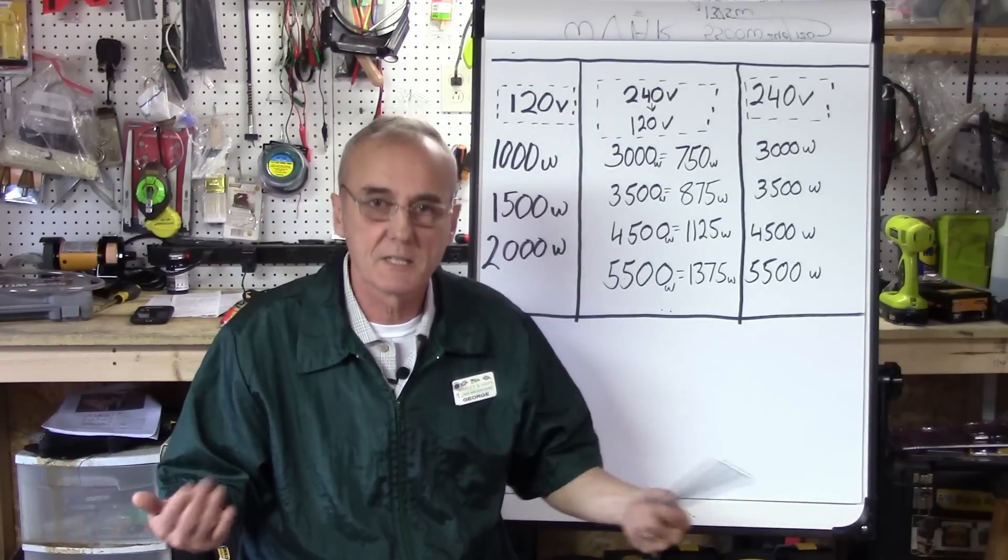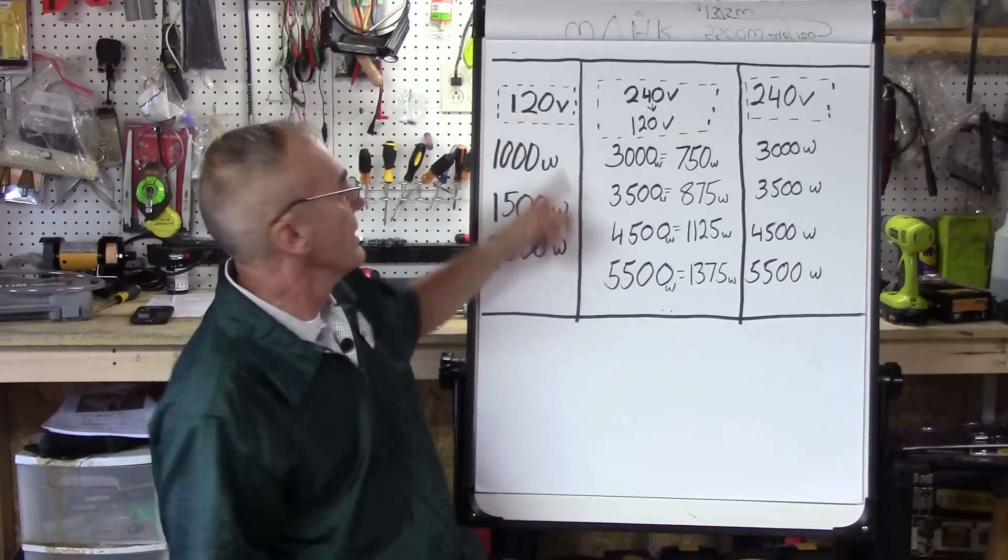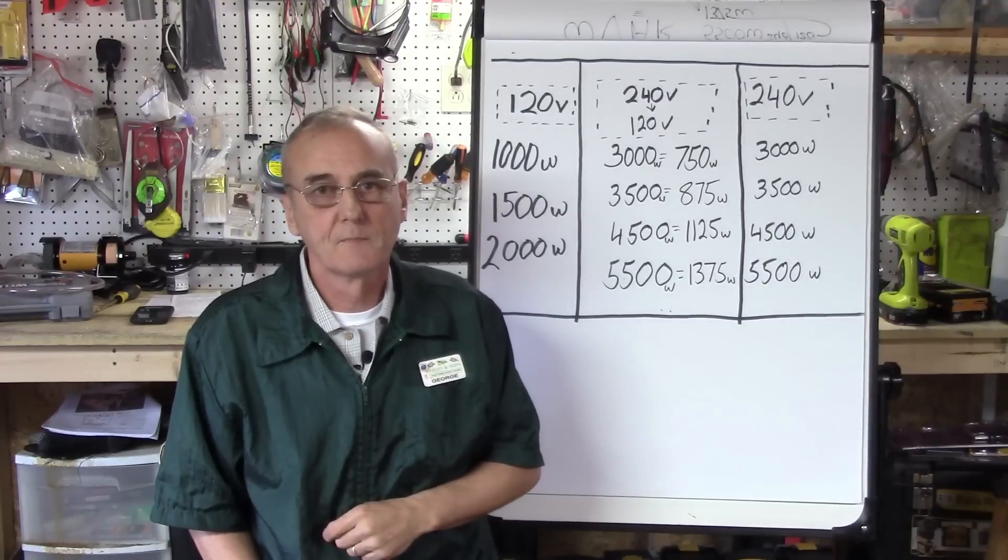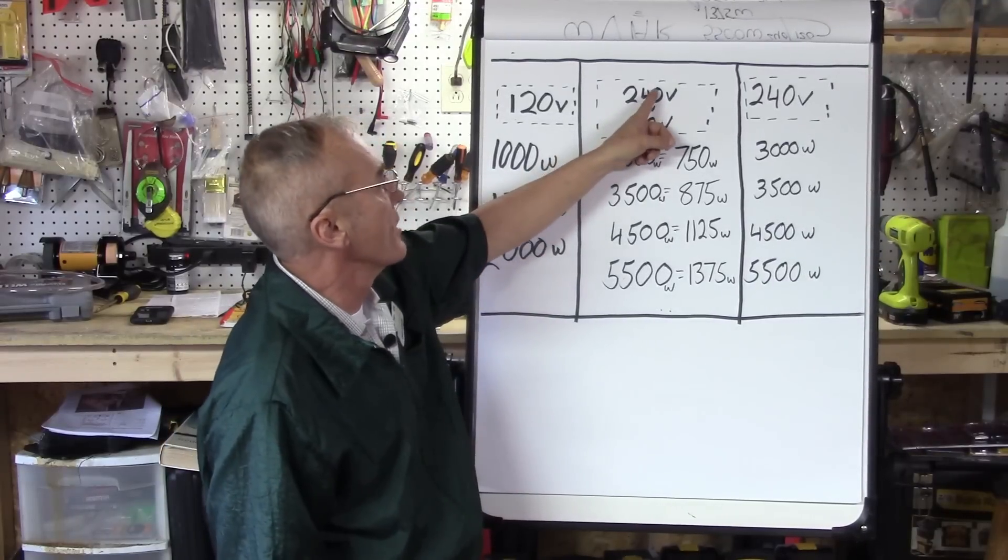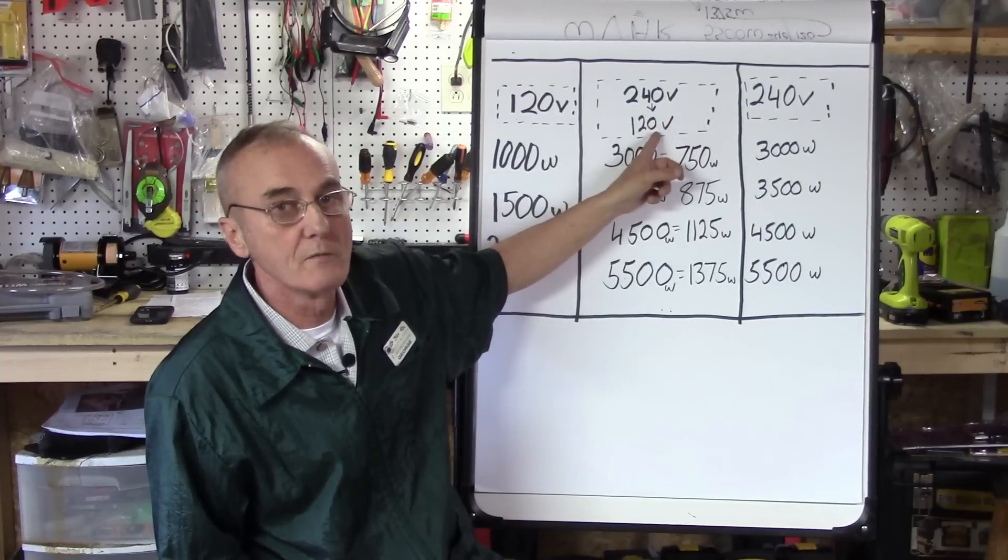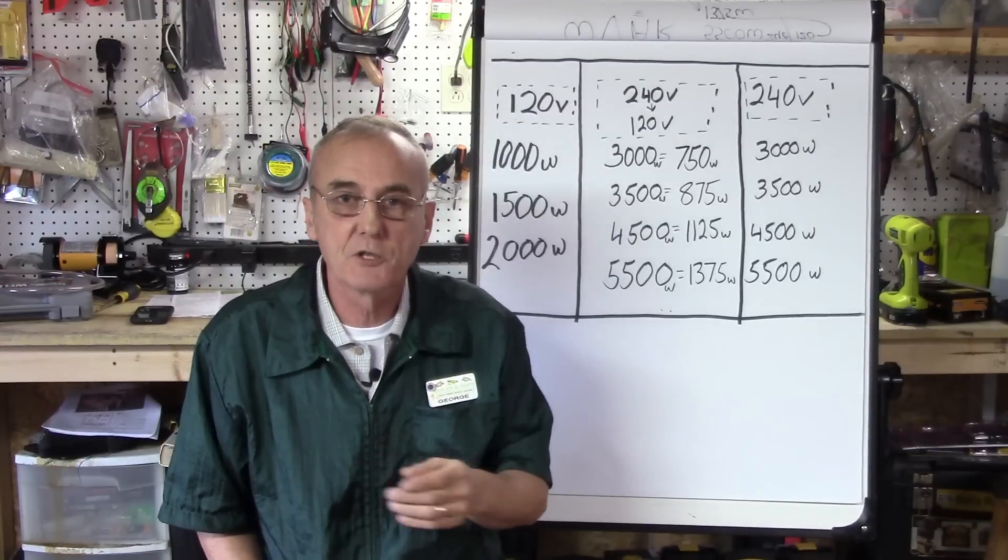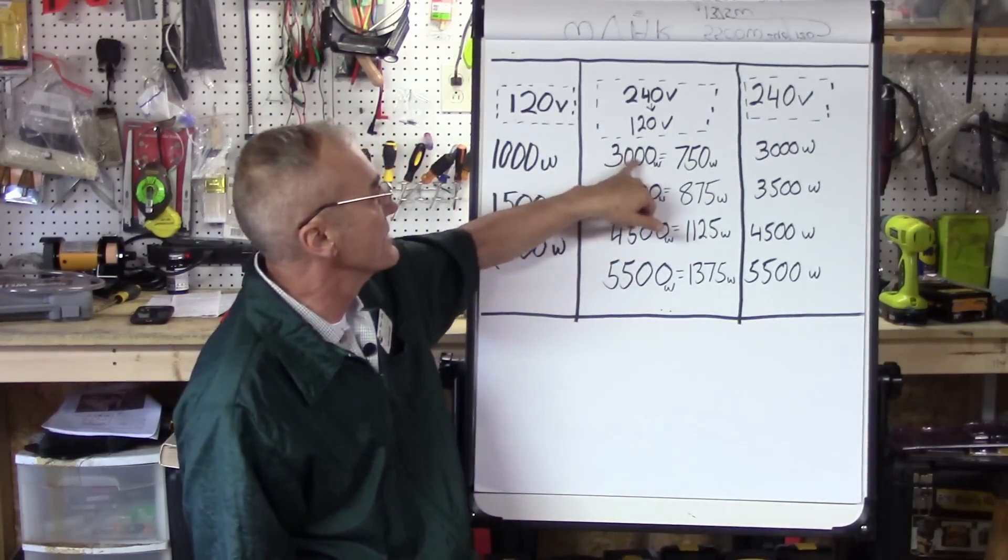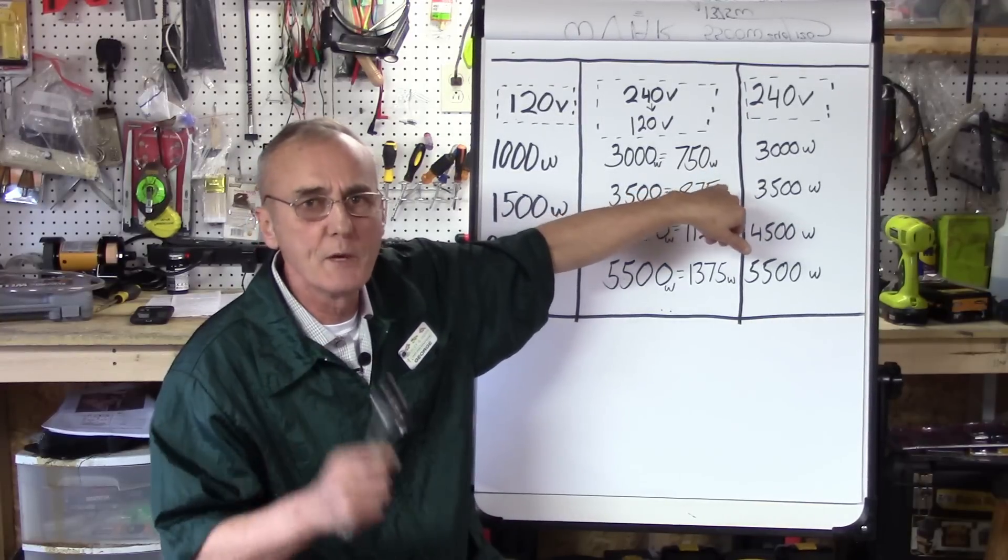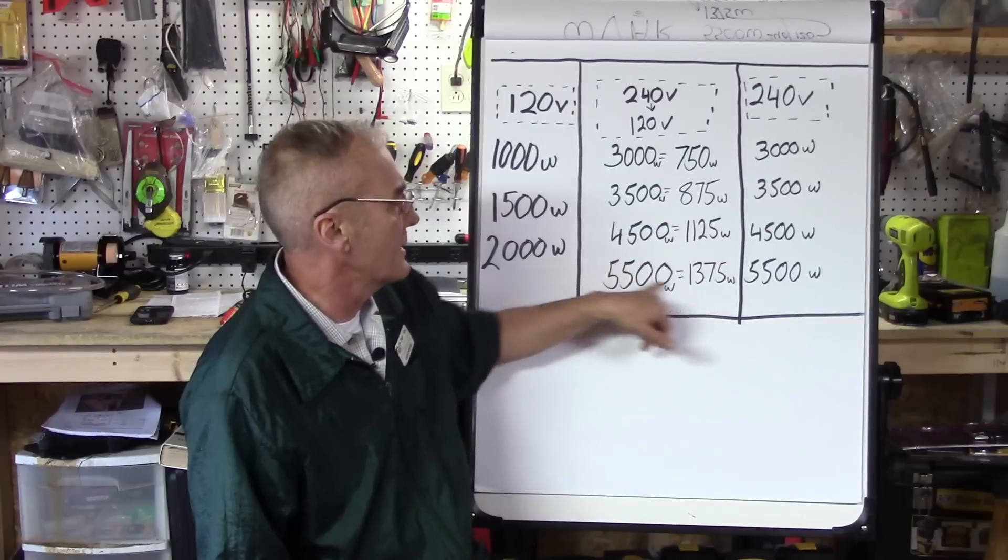This is what you may be faced with when you come across all those heater elements you're trying to figure out for your still. You'll have 120 volt category, and they come in 1500 and 2000 watt. You've got the 240 volt—remember you can wire these at 120 volts, but the 3000 watt times 0.25, because you lose 75% of the wattage, is really a 750 watt element now.